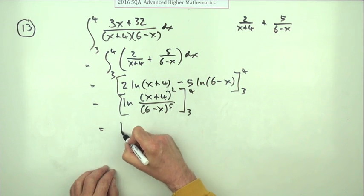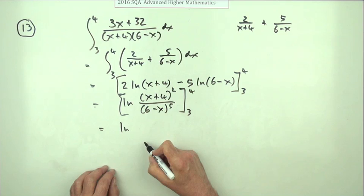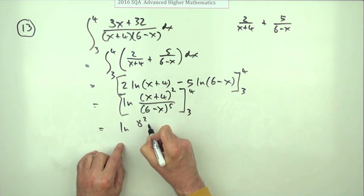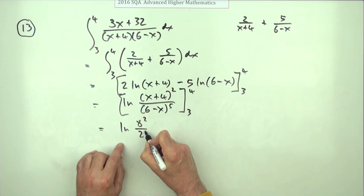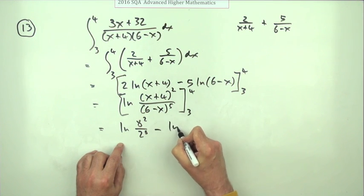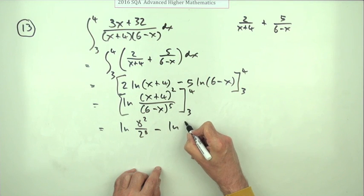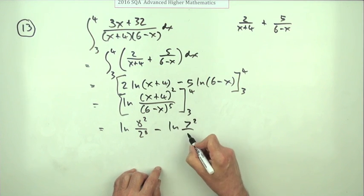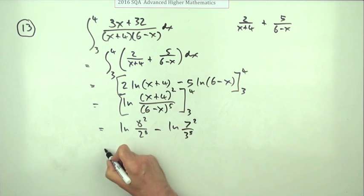That'll be easier. So first evaluation putting 4 in that'll be ln of 8 squared over 2 to the power 5 minus ln of putting 3 in that will be 7 squared over 3 to the power 5. Getting there.